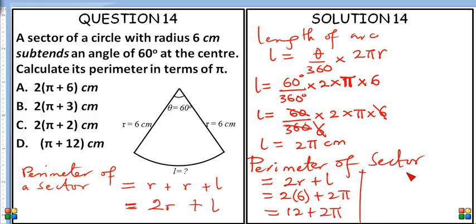2 is common to both of them, so if I bring out 2, factorize by bringing out 2, that's going to be 2 times (6 plus π) centimeters. And the answer is option A. The answer is option A.